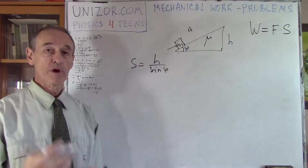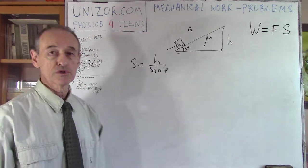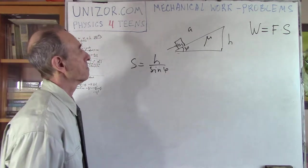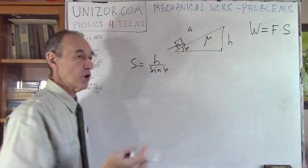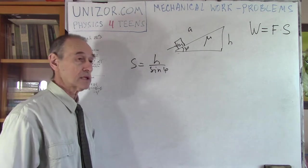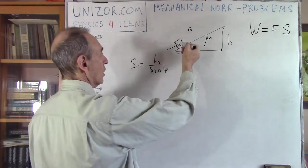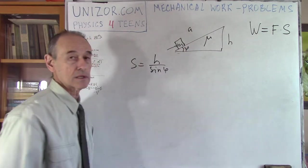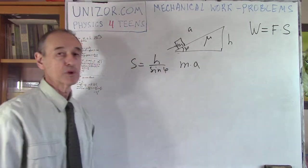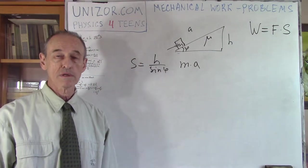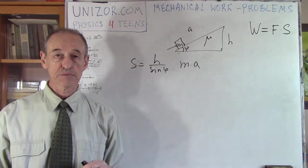Now, the distance is actually a simple thing, because this is the hypotenuse of this triangle, right triangle, and there is a catetus h, so obviously the distance is equal to h divided by sine of phi. Now, the force is more important, and it's kind of more difficult to calculate, and here is what we can do to get to the force.